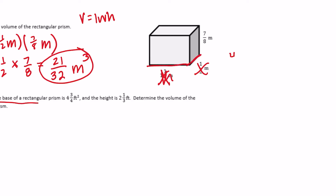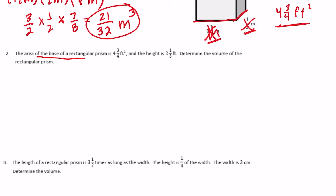The area of the base is 4 and three-fourths feet squared. We don't even need to know what the length and the width are individually, because they've already told us what they multiply to be, which gives us one less step to do.